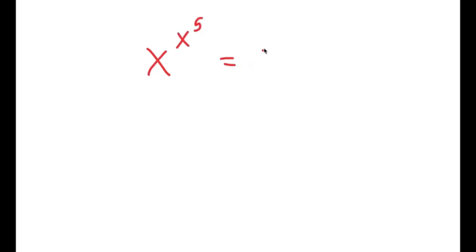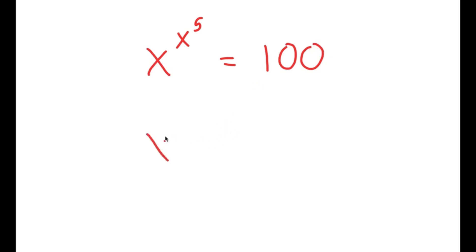All right. In this video, I'm going to solve the equation x to the power of x to the power of 5 is equal to 100. To solve this equation, I'm going to first start by taking the power of 5 on both sides.